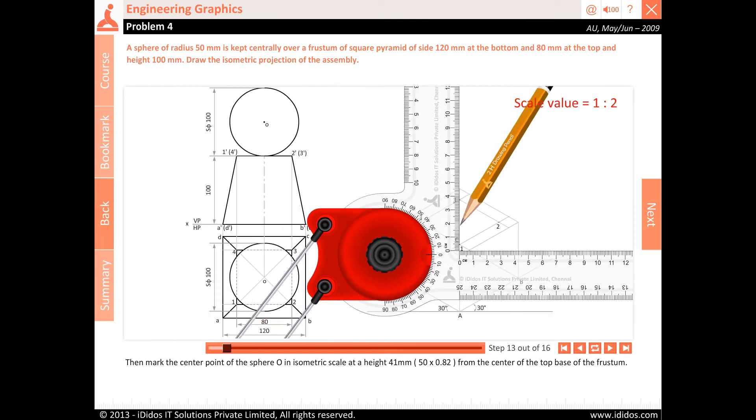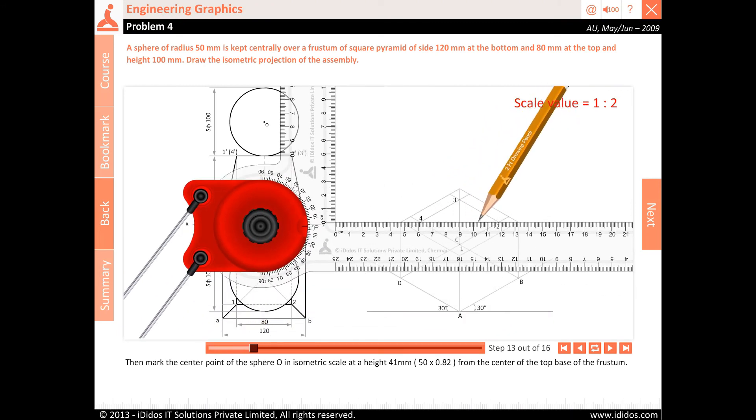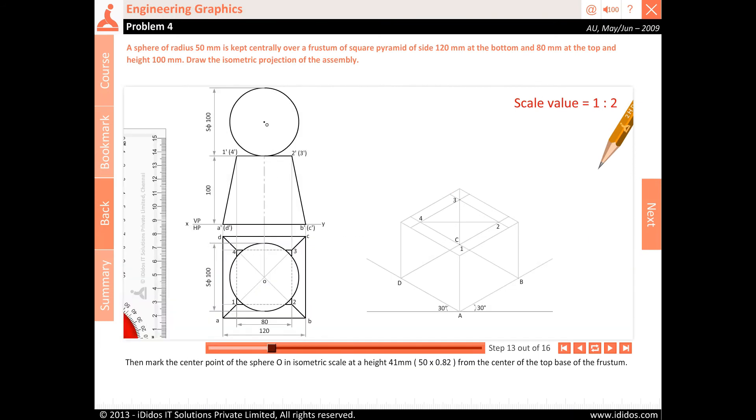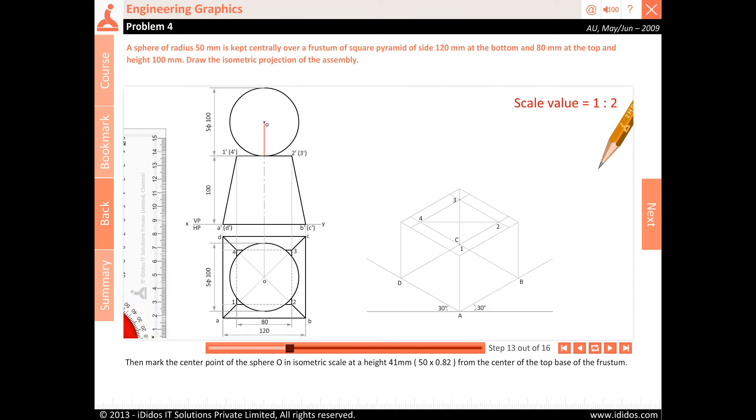Then mark the center point of the sphere O in isometric scale at a height 41 mm, 50 x 0.82, from the center of the top base of the frustum.